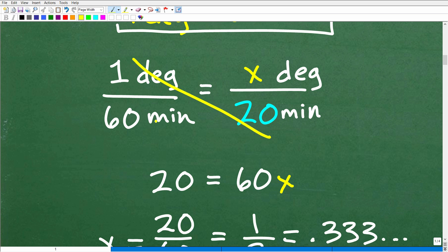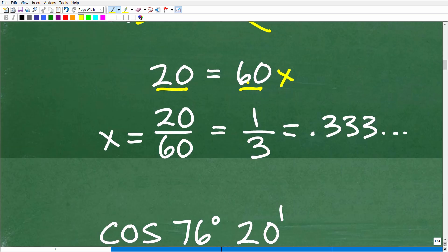And then, of course, we can just use basic algebra and use the cross product. So that's going to be 20 times 1, which is 20, and then 60 times x is 60x. So we're going to solve for x here. So we're just going to divide both sides of the equation by 60. And what do we get? We get x is equal to 20 over 60, which is, of course, one-third, which is 0.333 repeating. So that goes on forever and ever and ever. So 20 minutes is the same thing as 0.3 repeating or 0.333 forever degrees.